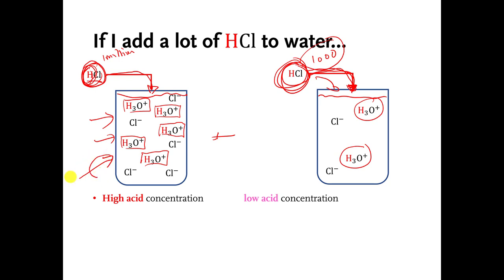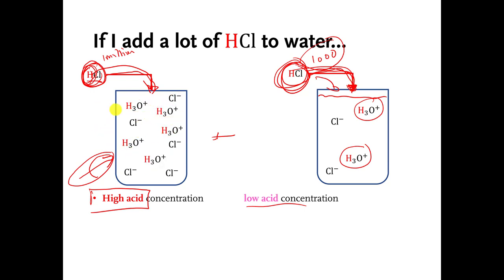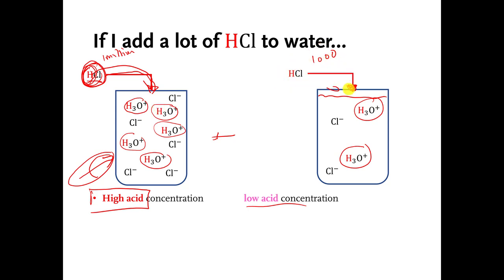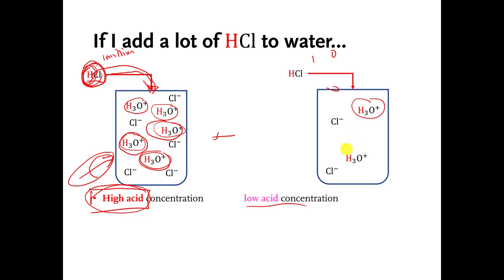The container on the left has relatively high acid concentration because I threw in a lot of acid. The container on the right has relatively low acid concentration. The way we measure acid concentration is by measuring the concentration of H3O plus, because that's what gets made once the H pluses are donated. So the concentration of H3O plus on the left is relatively high compared to the right.